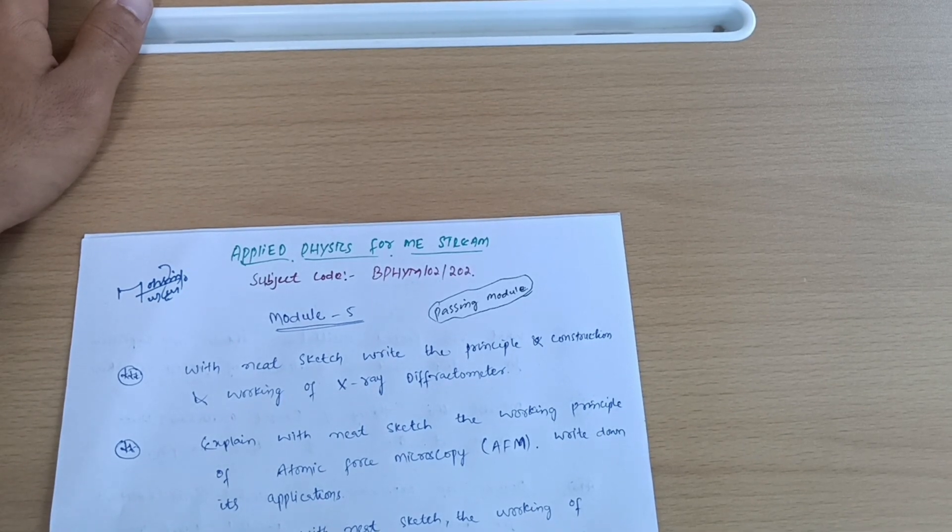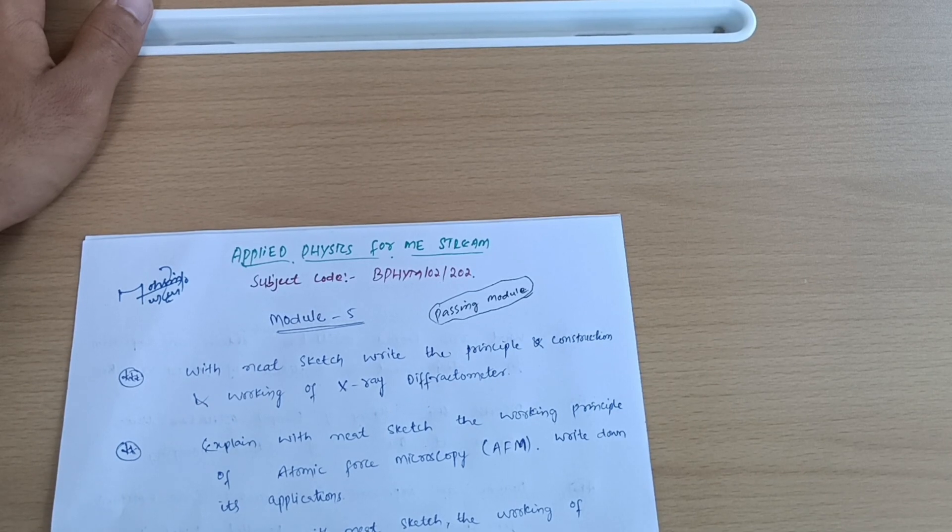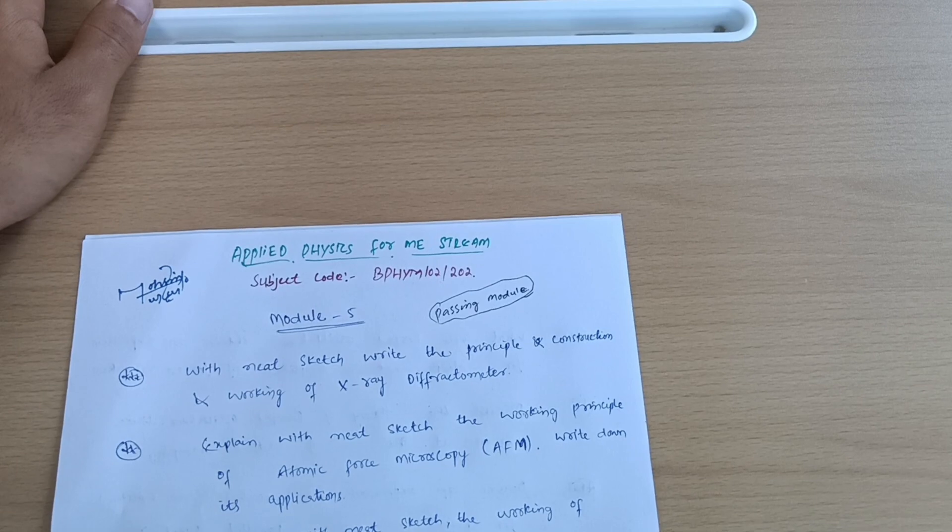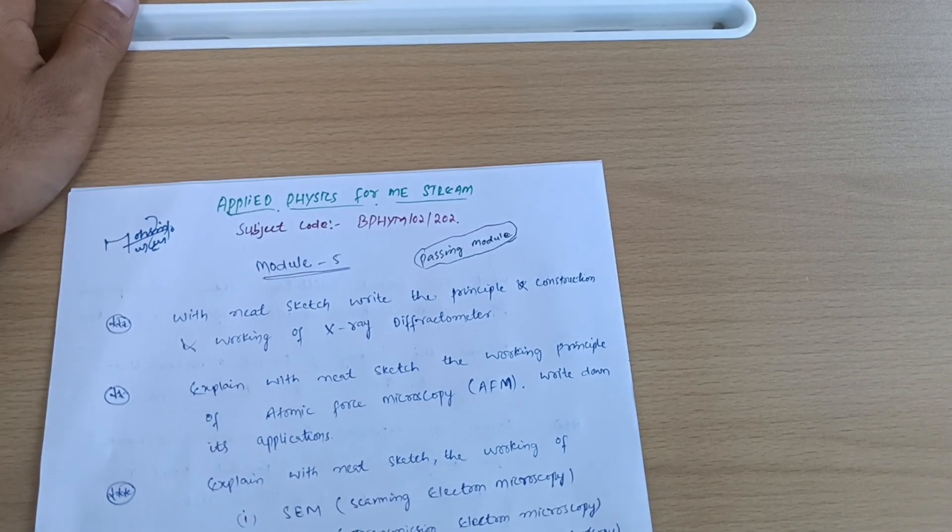One way is you should go through three modules fully - you should not skip anything from the syllabus. Another way is you should go through each and every module taking only the important questions from each and every module.